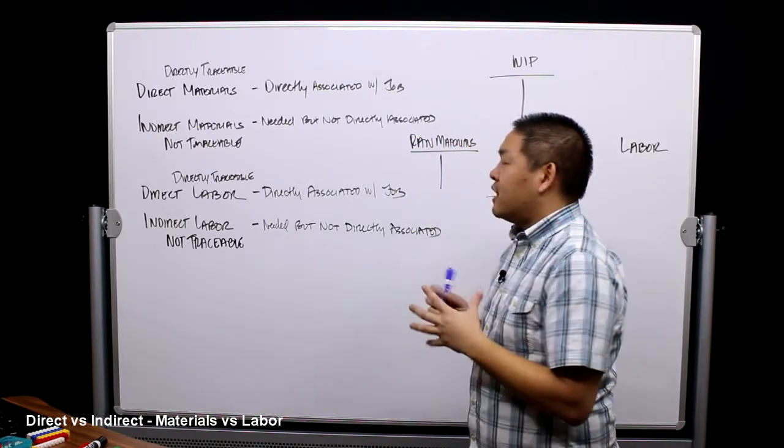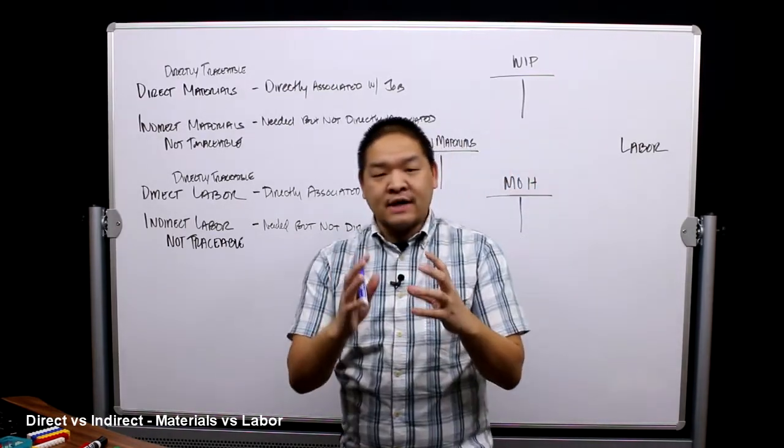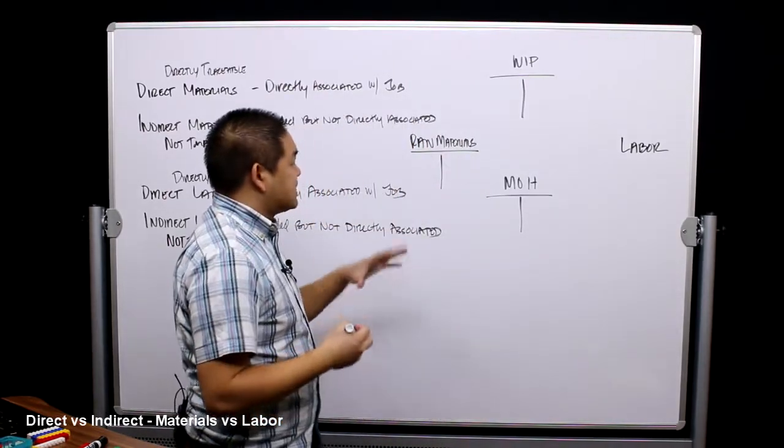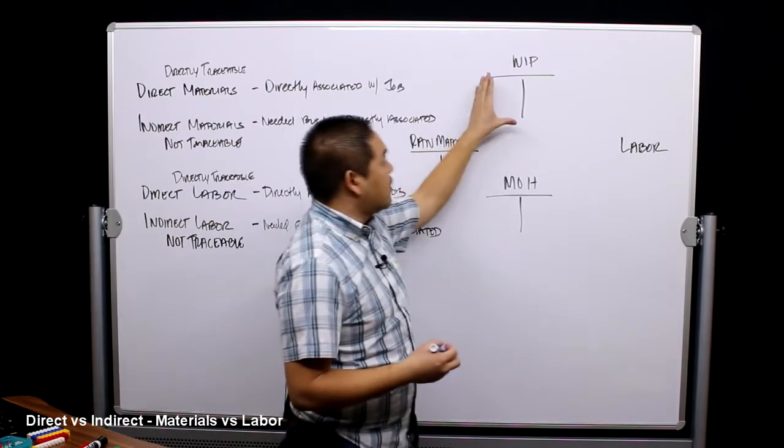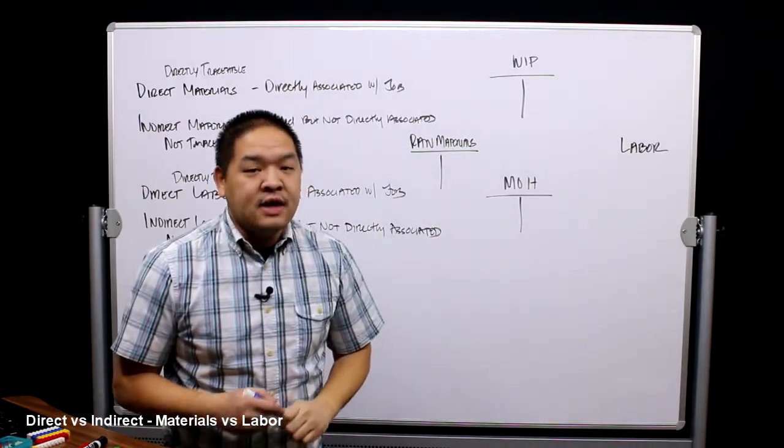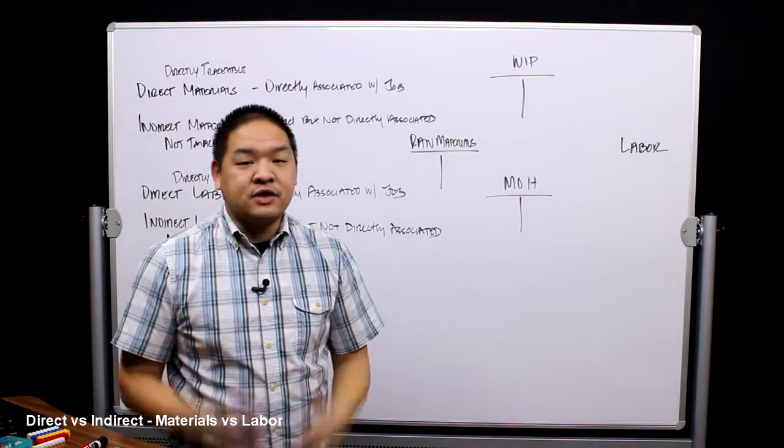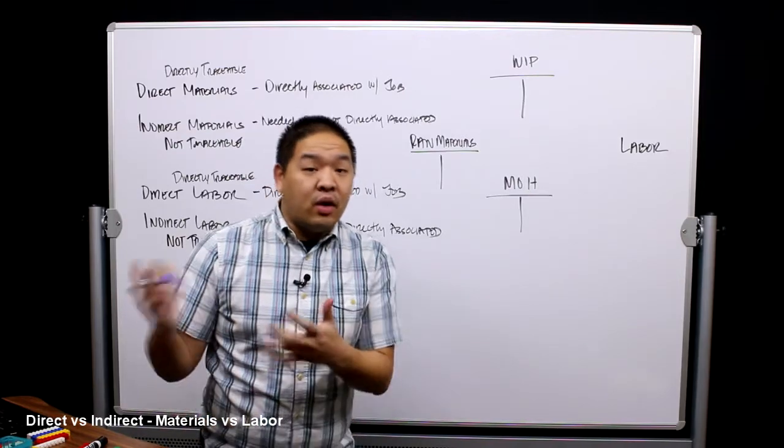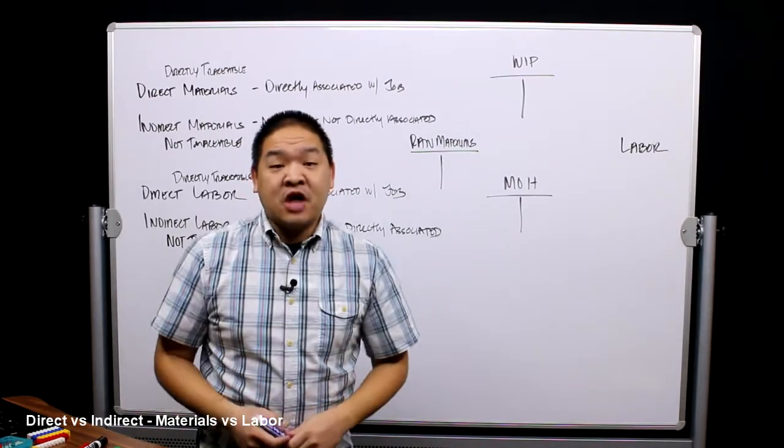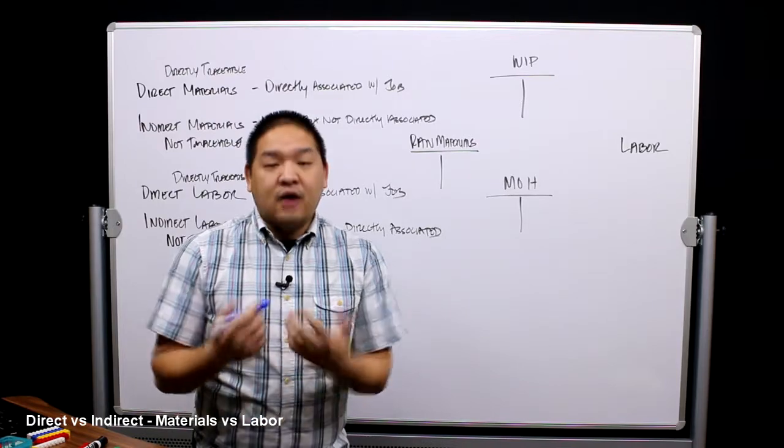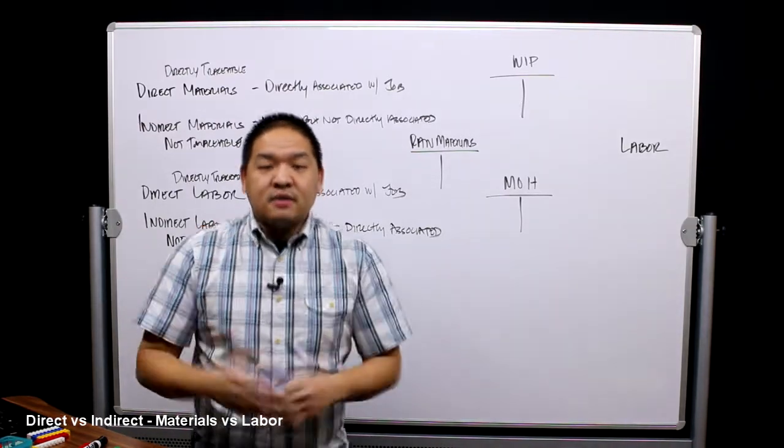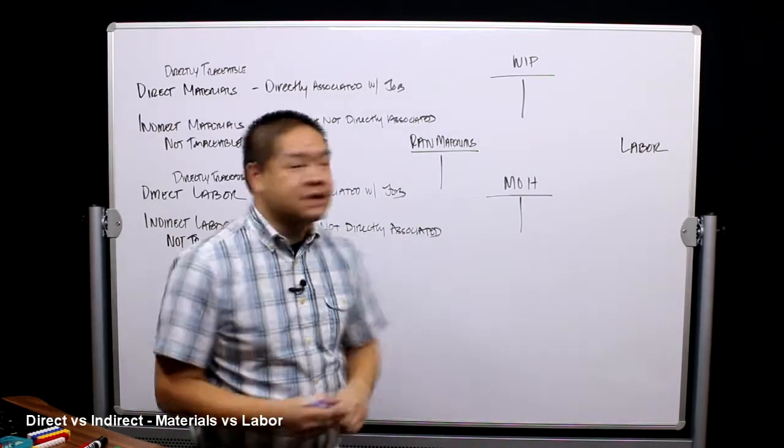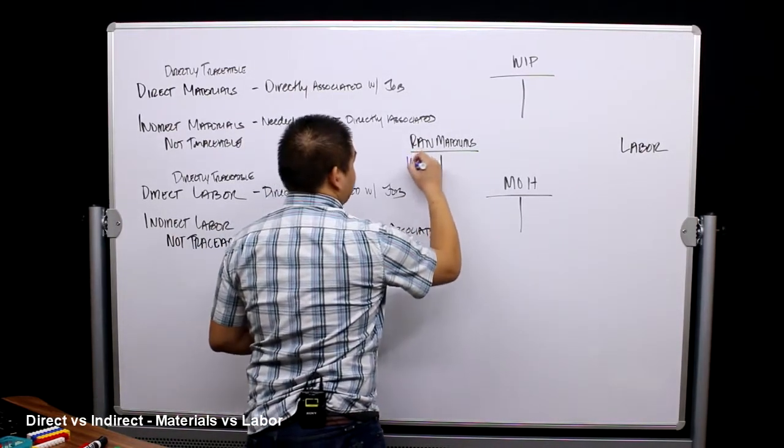How does this all fit in the framework of accumulating costs for the manufacturing process? They have to do with this idea of where do they go - do they go in work in process or manufacturing overhead? Let's talk about materials first. Let's say I buy from an oil company oil for cars. I might spend a thousand dollars of oil for cars.